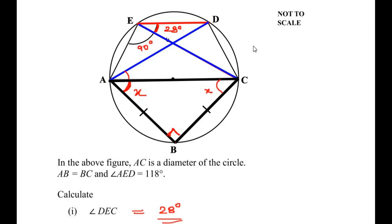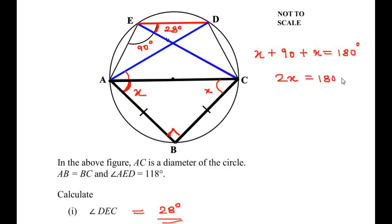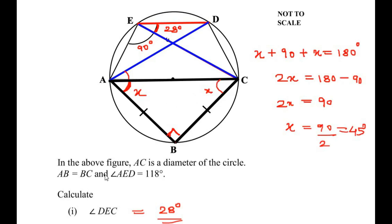By the angle sum property of the triangle, angle A plus angle B plus angle C equals 180 degrees. So x plus 90 plus x equals 180 degrees. Adding the x's: 2x equals 180 minus 90, so 2x equals 90 degrees, giving x equals 45 degrees. Therefore angle A is 45 degrees and angle C is 45 degrees.